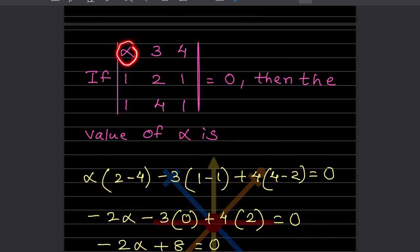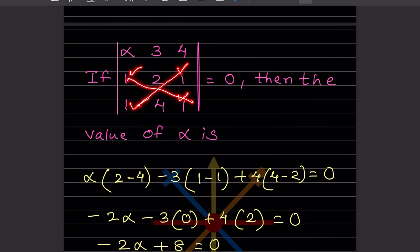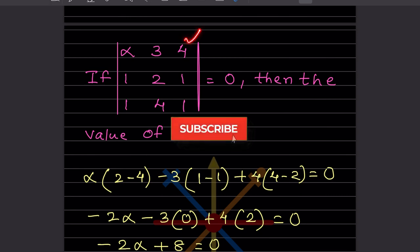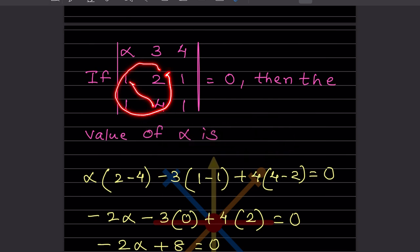So alpha is in the first row. We will use cofactor expansion along the first row. Labeling the 2x2 submatrix entries as A, B, C, D — the formula is AD minus BC. The first term gives us 2 minus 4. For the second term, we take minus 3, and crossing out gives us 1 minus 1. For the third term, we take plus 4, and crossing out gives us 4 minus 2.